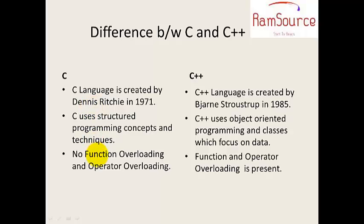In C, there is no function overloading or operator overloading. Whereas in C++, these features are supported. This is one of the main differences between C and C++.